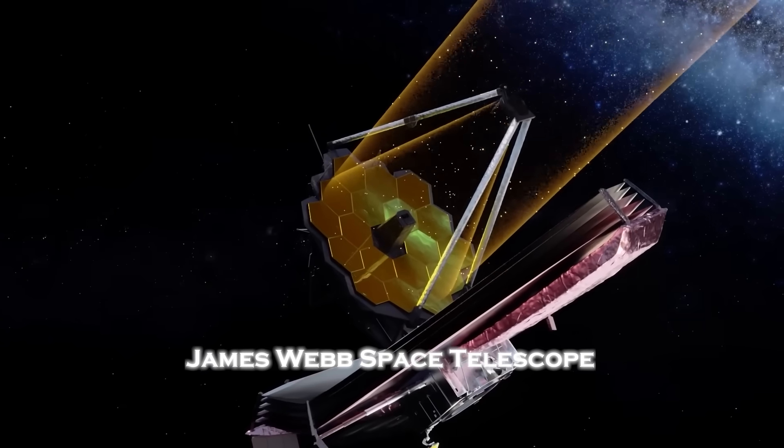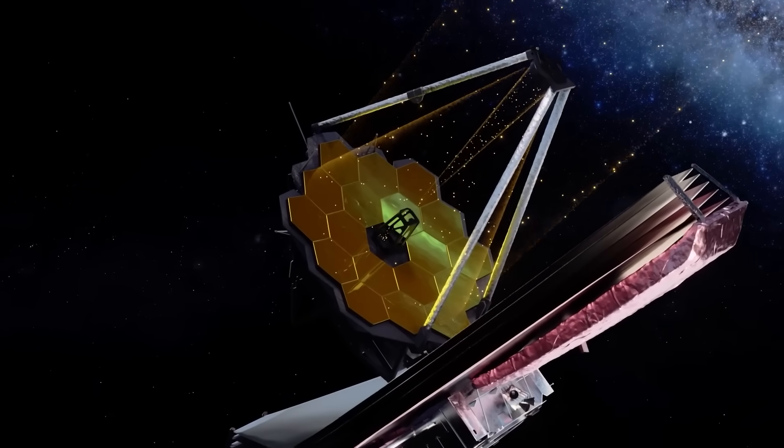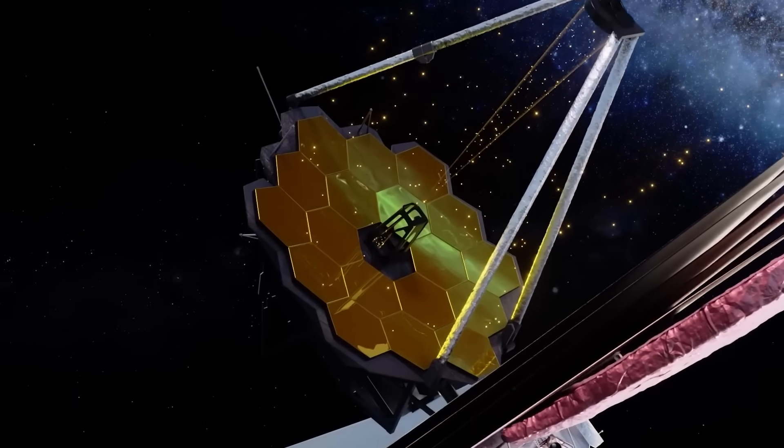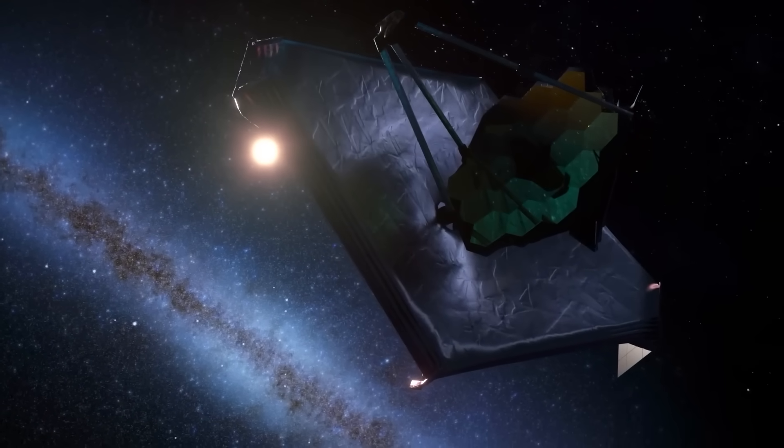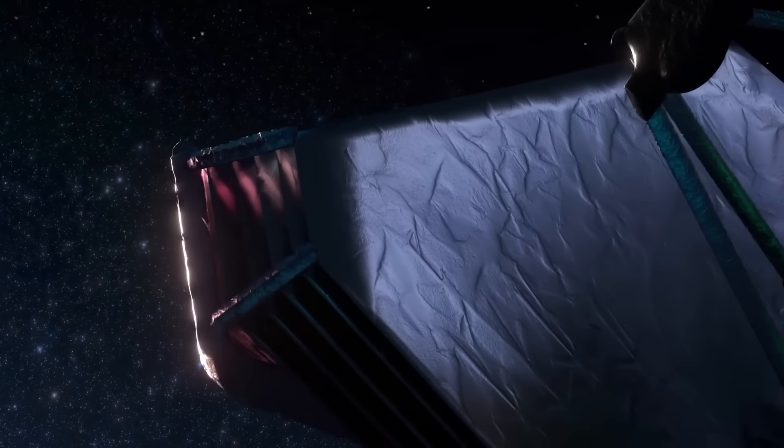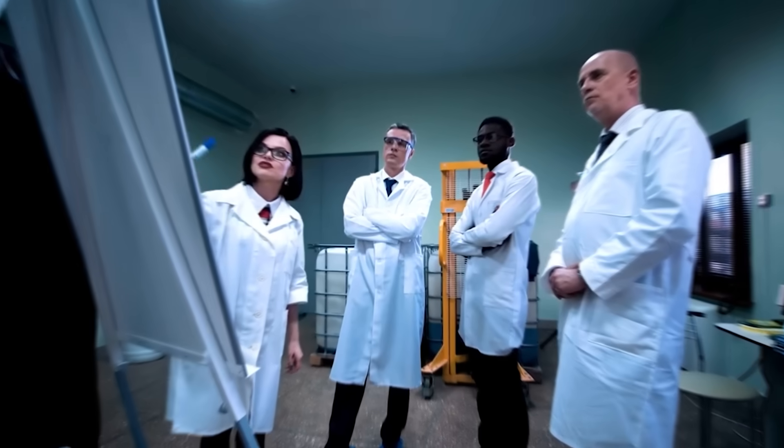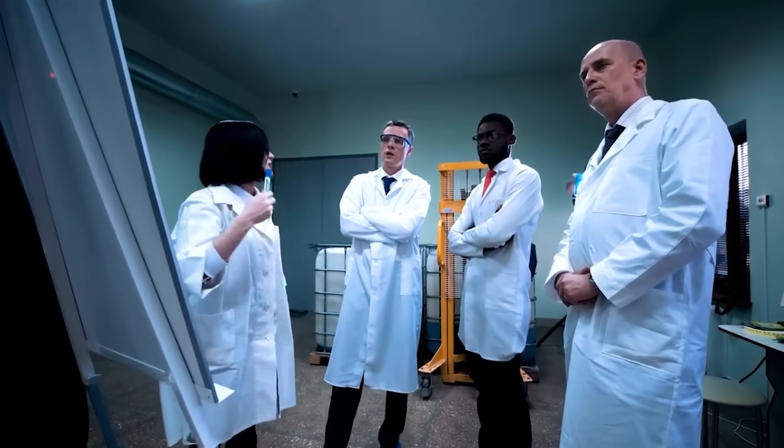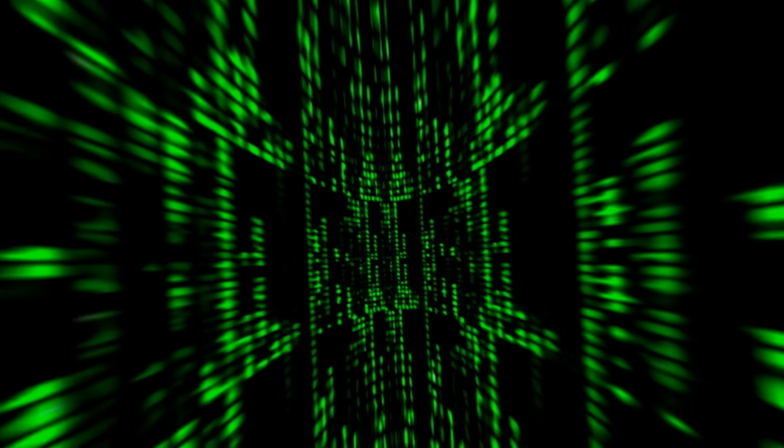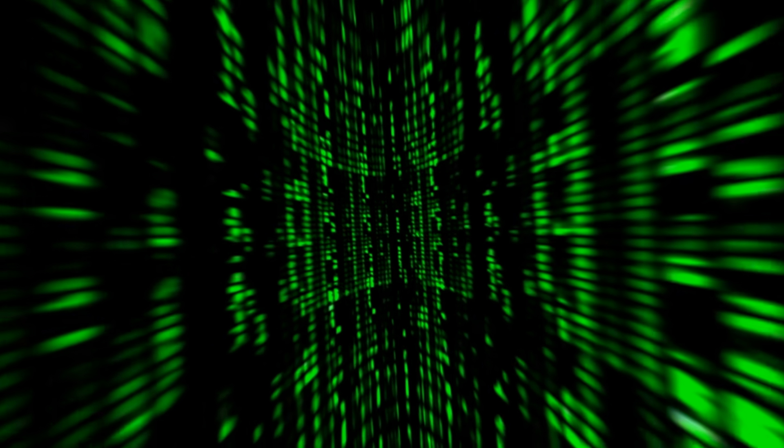Then the James Webb Space Telescope turned its gaze toward the object. And what it saw shouldn't exist. A smooth, metallic surface. A heat signature that never fluctuated. Patterns. Geometric. Mathematical. Engineered. And just when scientists were ready to share their findings, the data went dark, locked behind government firewalls, classified under national security.